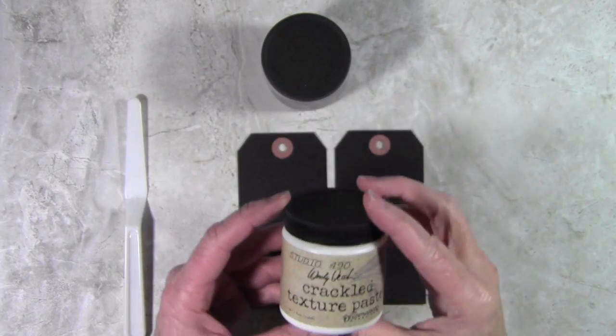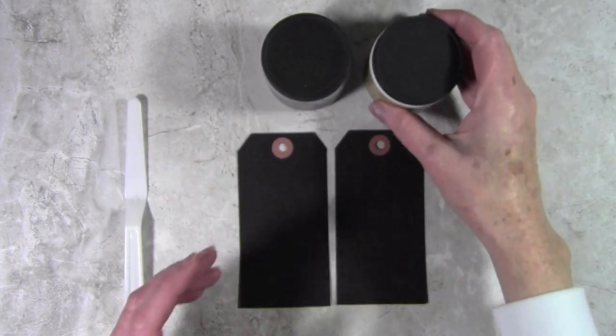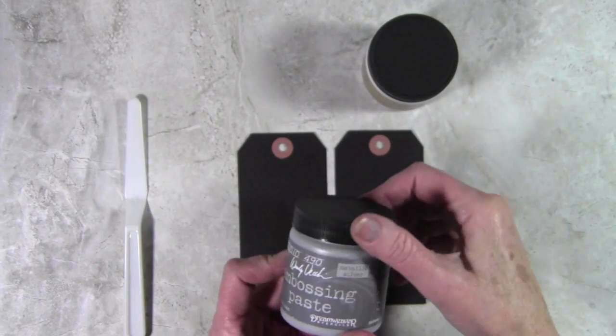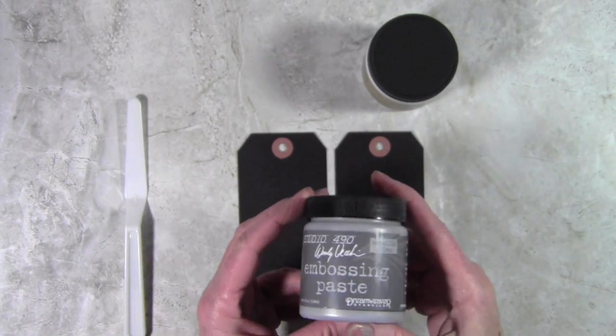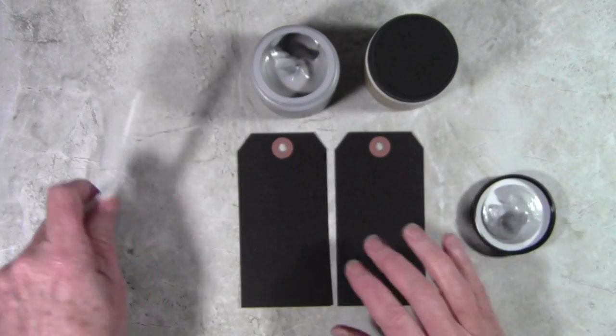I'll be using the Wendy Vecchi crackle texture paste. After seeing Wendy demonstrate this at CHA, I was curious to see what the difference was when it was used by itself on paper and also layered over silver embossing paste.